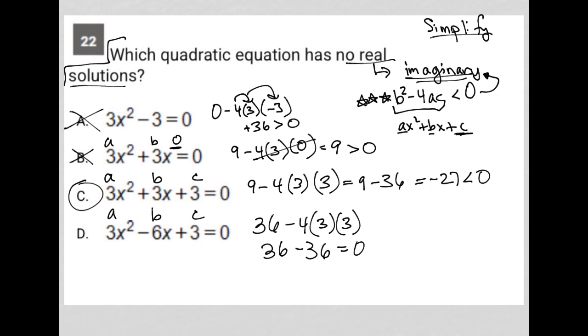Zero, of course, is not less than zero. It's just equal to zero. Therefore, choice C is the only answer choice that gives us a b squared minus 4ac that is less than zero. And therefore, it's the only answer choice that gives us imaginary solutions, a.k.a. no real solutions.